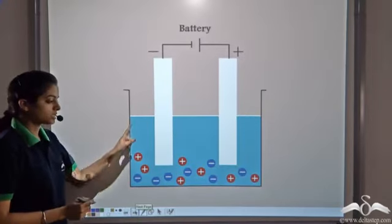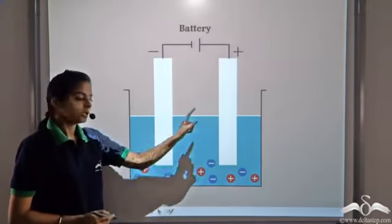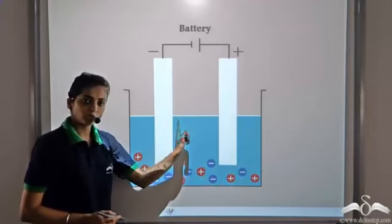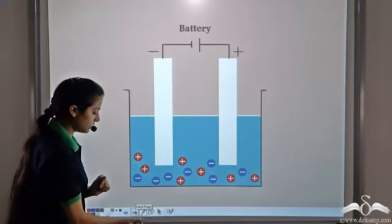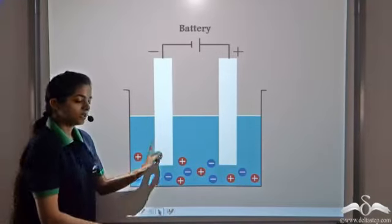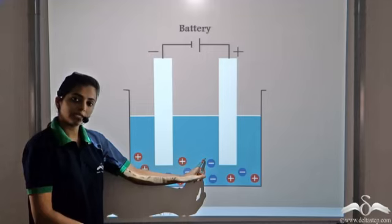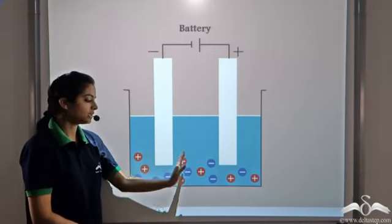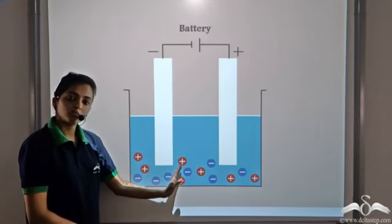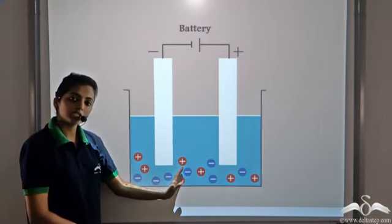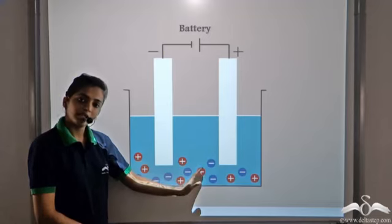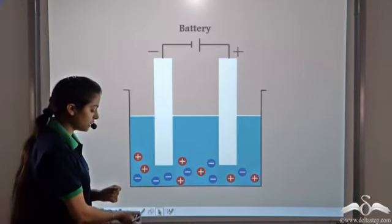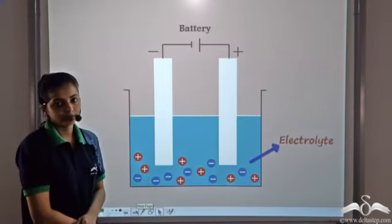So this is the electrolytic cell. It consists of two electrodes. The solution that we take inside this electrolytic cell dissociates into ions — it forms positively charged ions and negatively charged ions. This solution is known as an electrolyte.